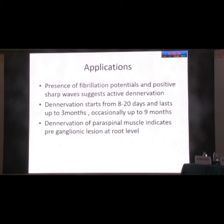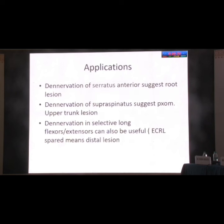Presence of fibrillation potentials and positive sharp waves suggests the muscle is actively denervating. This denervation starts variably from 8 to 20 days after nerve injury and lasts up to 3 months, but occasionally up to 9 months. For applications: if you insert a needle into paraspinal muscles and find active denervation, it indicates a preganglionic lesion at the root level. Denervation of serratus anterior suggests root level, while denervation of supraspinatus suggests proximal upper trunk level. Studying denervation patterns across long flexors and extensors of the forearm helps localize which nerve is affected and where.